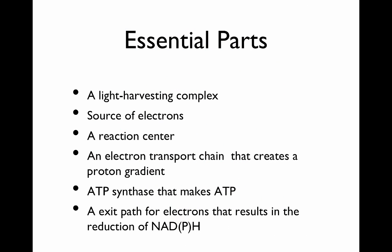The essential parts: you have a light harvesting complex, a source of electrons, and that electron is transferred to the reaction center. The reaction center boosts the energy of the electron, it goes on to an electron transport chain that creates a proton gradient, and that gradient is then dissipated by ATP synthase making ATP. Finally, there is an exit path for the electrons that results in the reduction of NAD to NADPH — this is where they get their reducing power. So light reactions can create both ATP and NADPH.